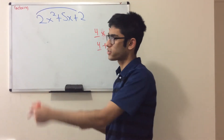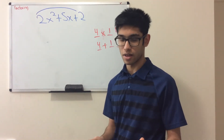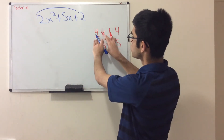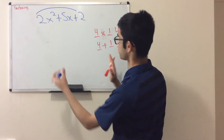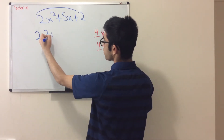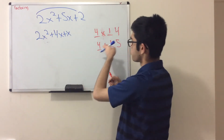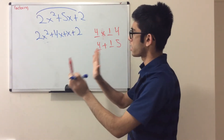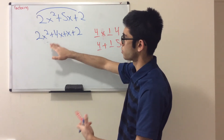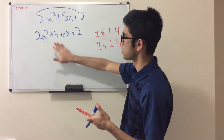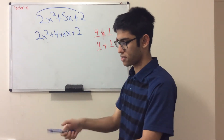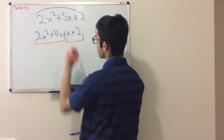Now you might wonder: do I just write the factors? There's one more step. I have to rewrite my middle term using those two numbers. So instead of writing 5x, I rewrite the expression as 2x squared plus 4x plus x plus 2. Notice that 4x plus x equals 5x, so this is the same thing — I just rewrote the middle term using my two factors, 4 and 1.